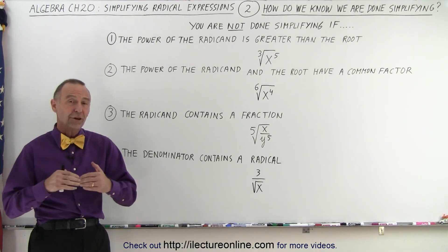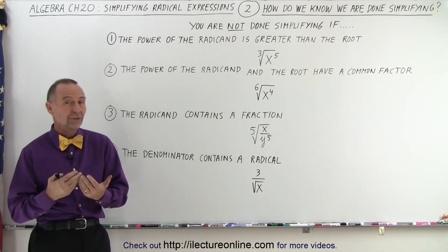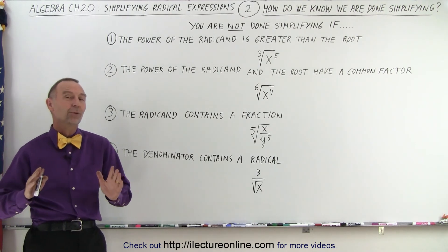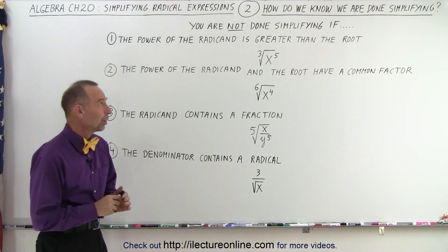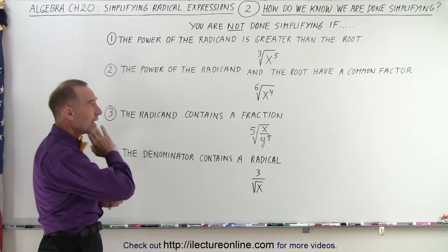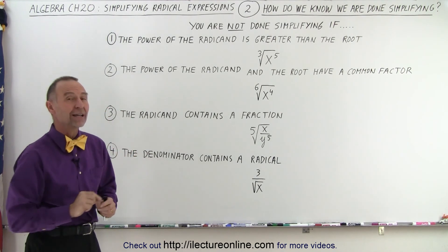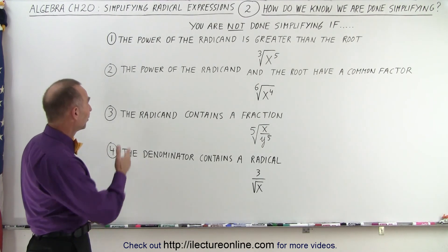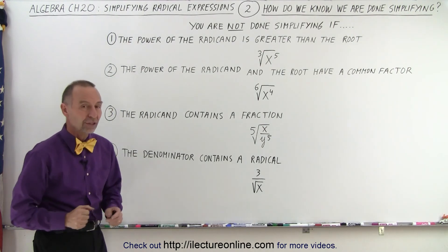Well, there actually are some rules that we can count down to tell us whether or not we should continue or whether or not we are done. So, what are some of those rules? Well, you can say that you are not done simplifying the radicals if these following four conditions still exist.